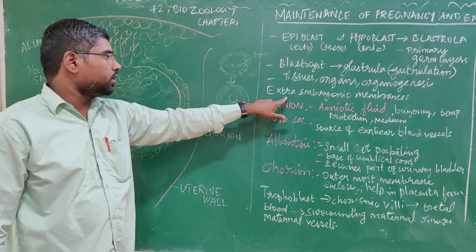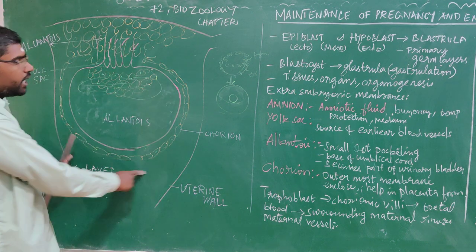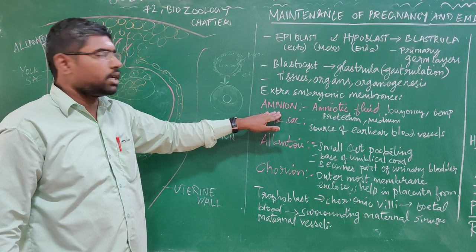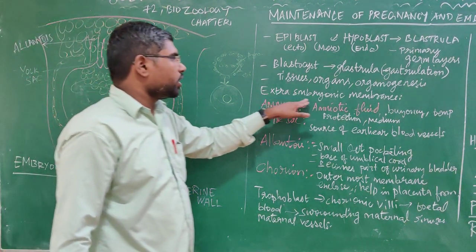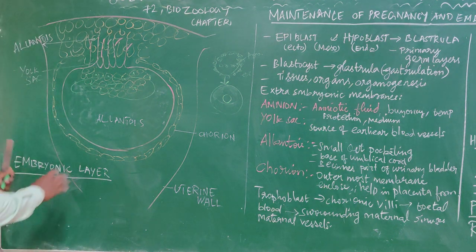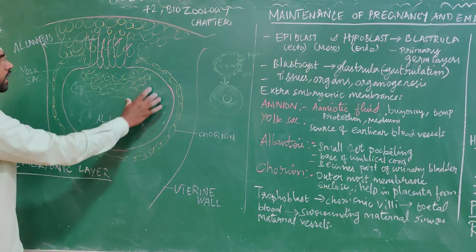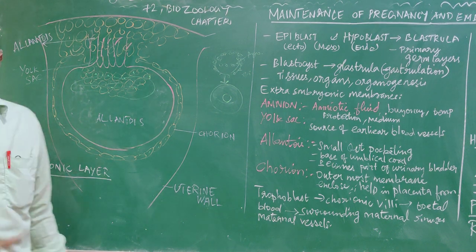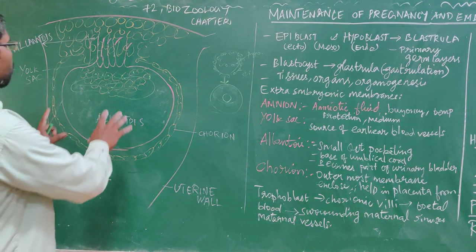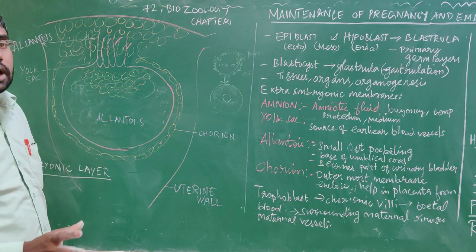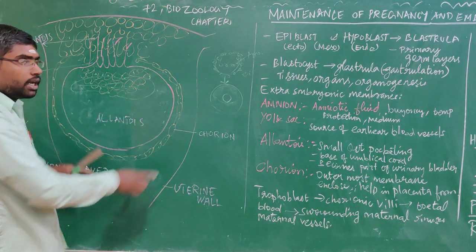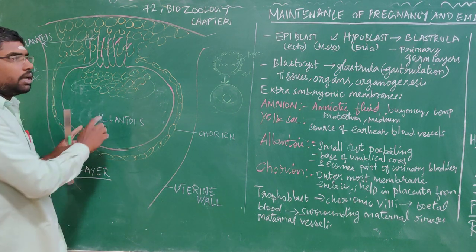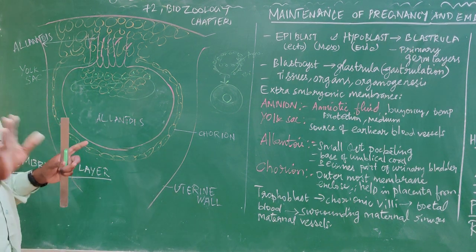There is an embryonic layer covered by a membrane. We call it the amnion. This membrane can be used to provide nutrition to the body and also serves as protection, acting as a shock absorber.